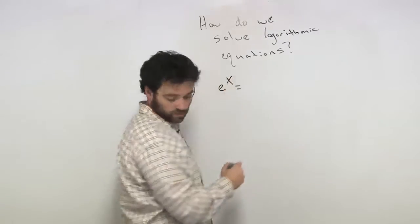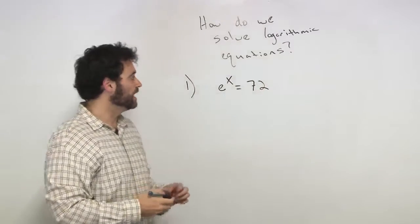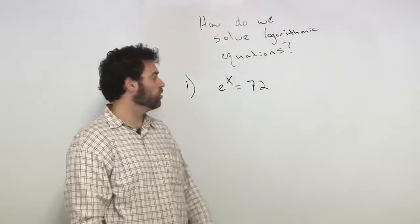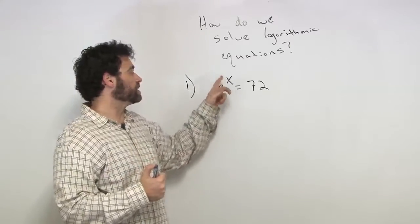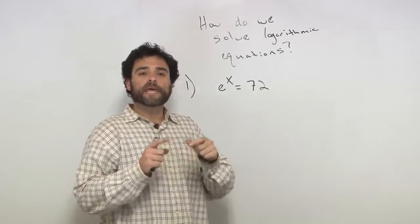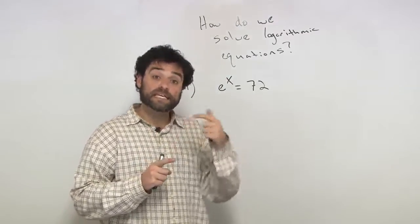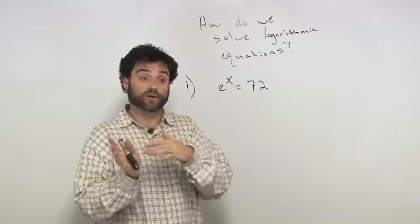e to the x is equal to 72. How do I solve that? I've got to solve for x. How do I get rid of this e to the x, you asked? Great question. Now remember, natural log is the inverse of e to the x, or e to the x is the inverse of natural log. They go together.